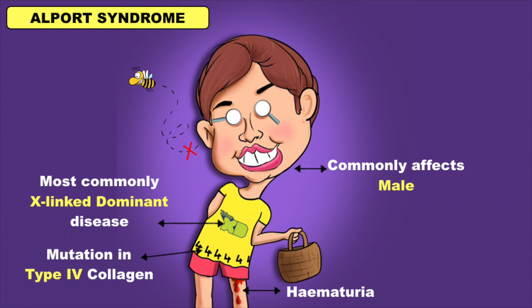Here you can see he can't hear the bee buzzing around him. This is for sensorineural hearing loss. Remember that it is the most common extrarenal manifestation.